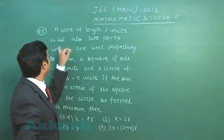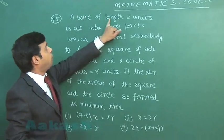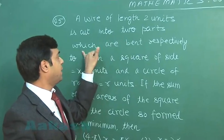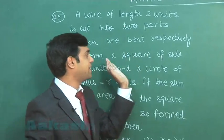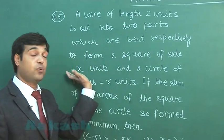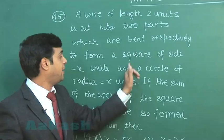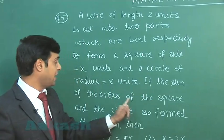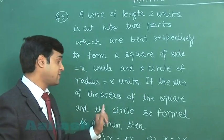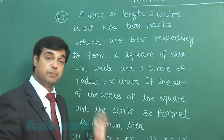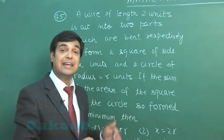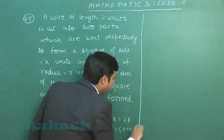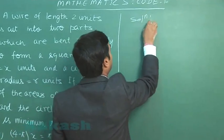Let us take the next one, that is the 45th question. A wire of length 2 units is cut into two parts which are bent respectively to form a square of side x units and a circle of radius r units. If the sum of the areas of the square and the circle so formed is minimum, then we have to find the relation in x and r. Simple one from application of derivatives, let us start this one.